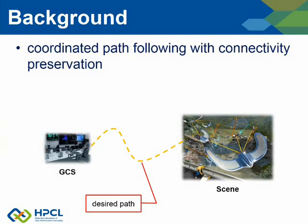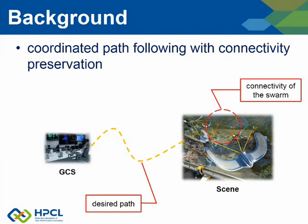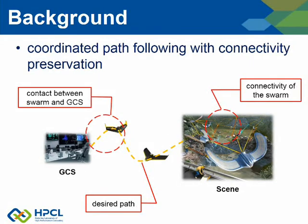It brings some significant challenges to address the problem. Firstly, a basic flock needs to be realized when the mission starts. Then the flock should follow the desired path while avoiding collisions. And lastly, connectivity preservation must be guaranteed to satisfy the demands of coordination and cooperation, including connectivity of the swarm and contact between swarm and GCS.